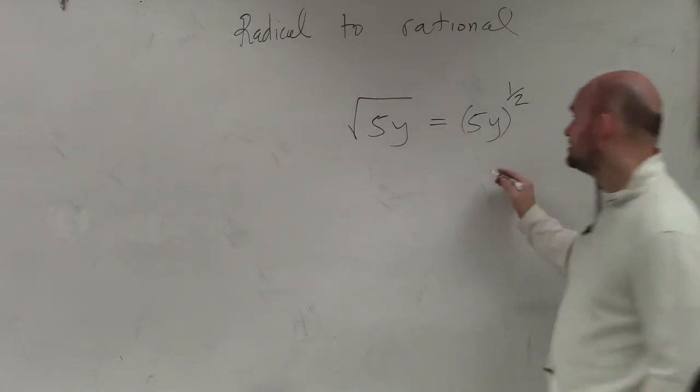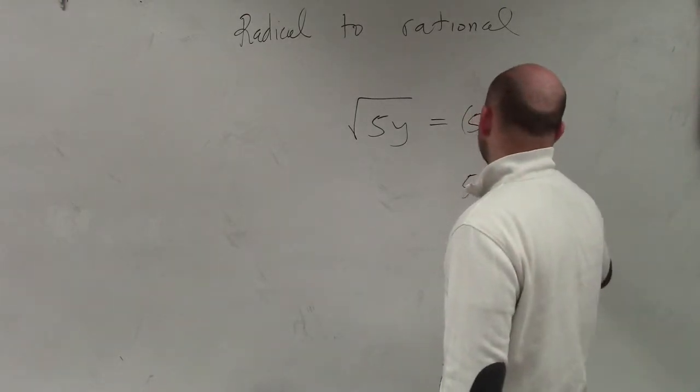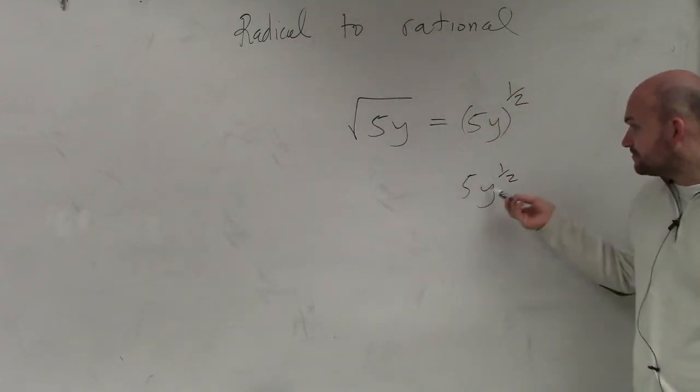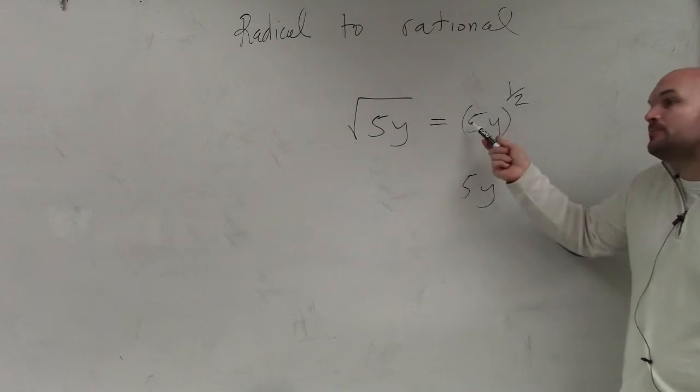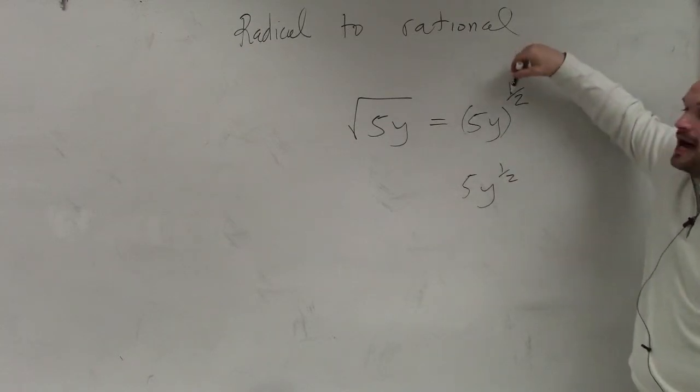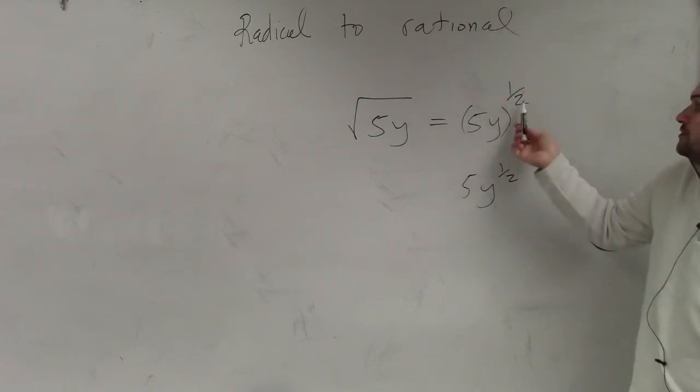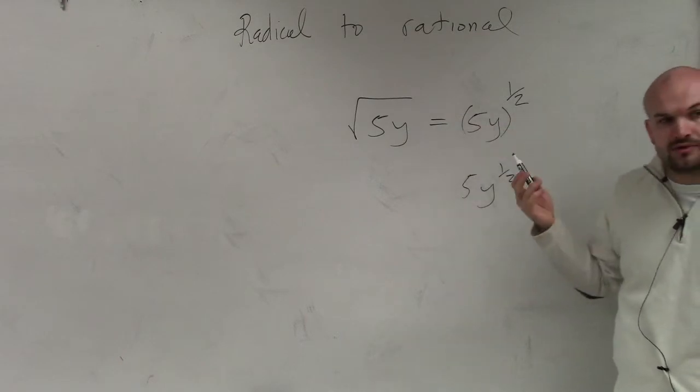Very important because 5 times y to the one-half power just means y to the one-half power, right? That one-half is not applied to the 5. But when you put it in parentheses, now you use the power to product rule, which says both terms are raised to the one-half power.